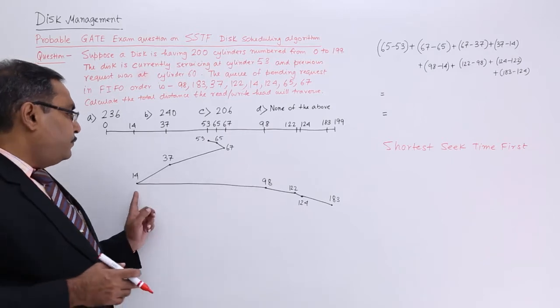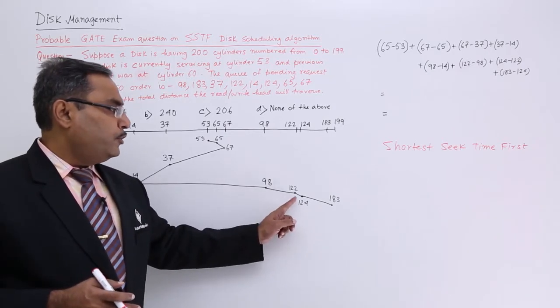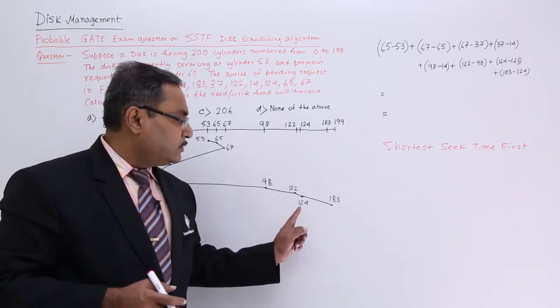And then 98 minus 14, 122 minus 98, 124 minus 122, and 183 minus 124.